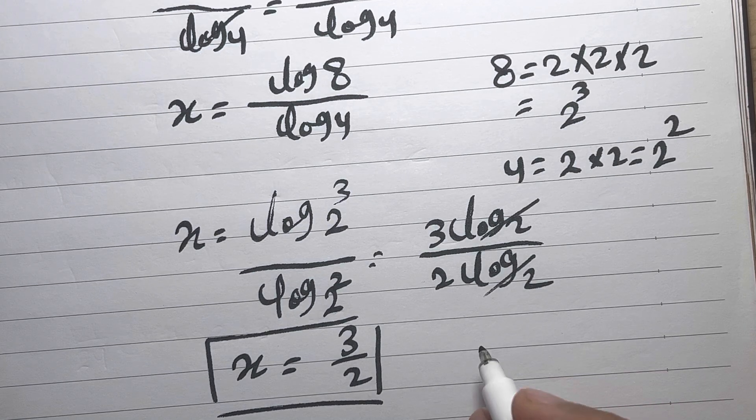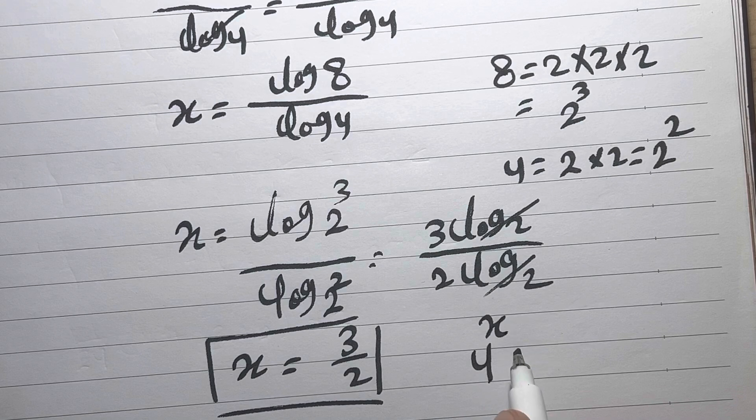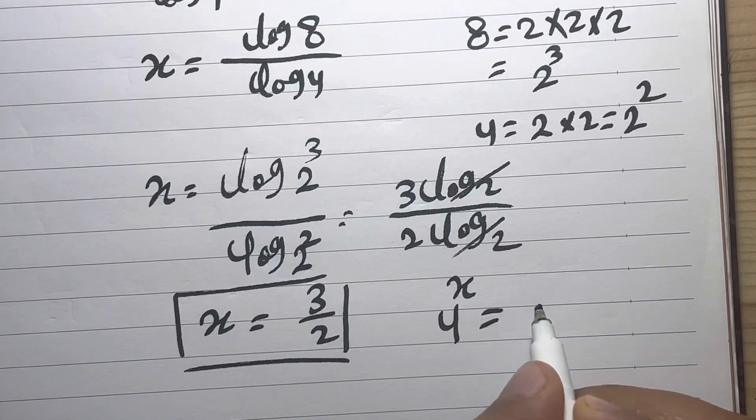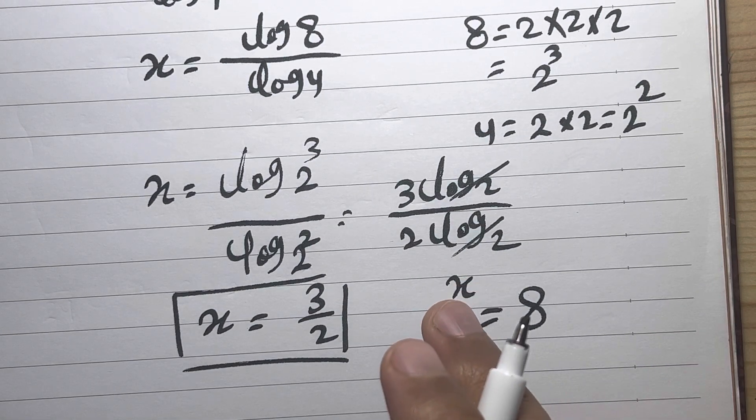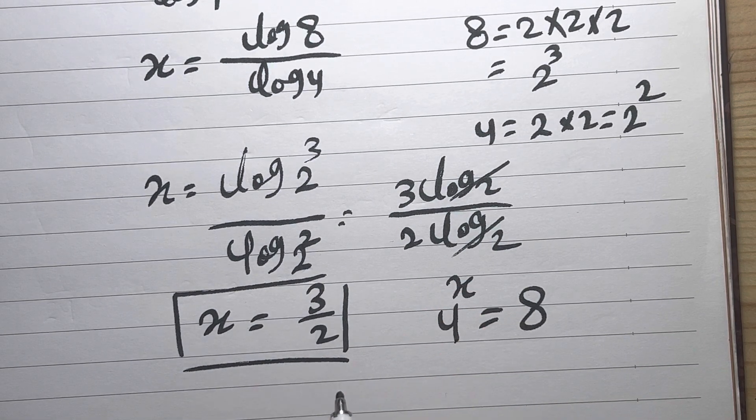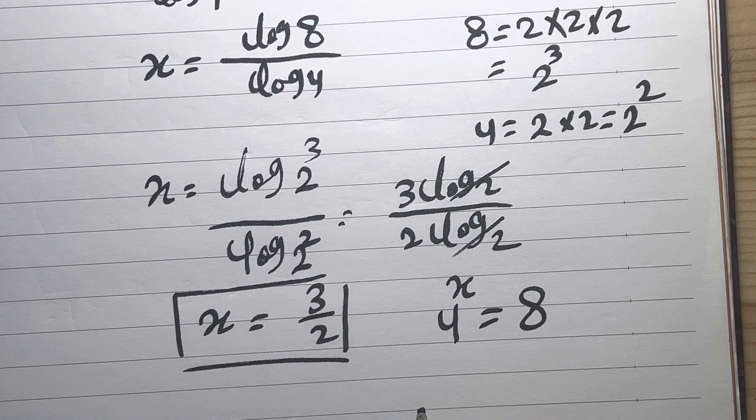From the beginning we have the equation 4^x equals 8. Let's check if our answer is correct. We are going to substitute the value of x by 3 over 2. We already know 4 can be written as 2^2.